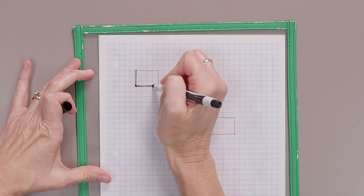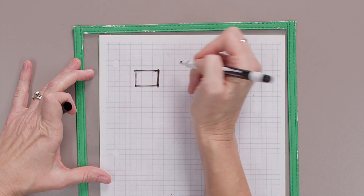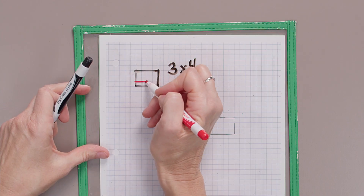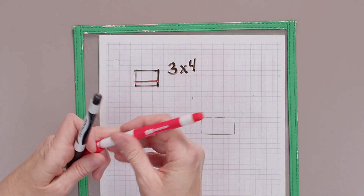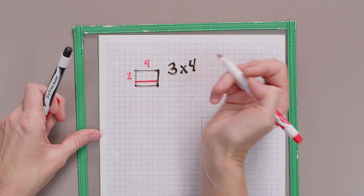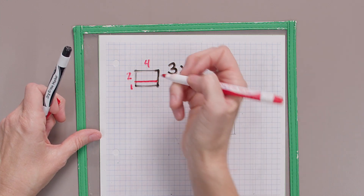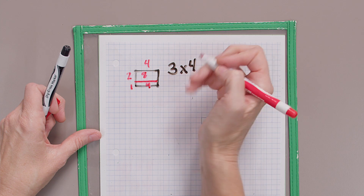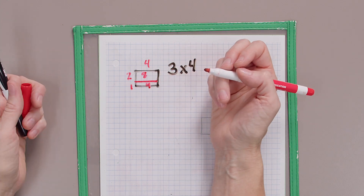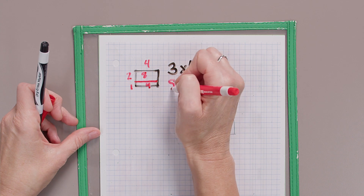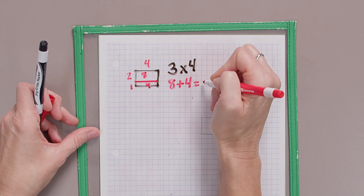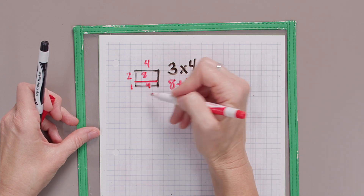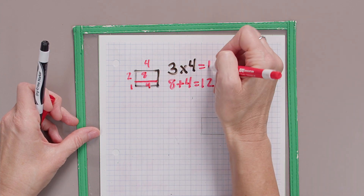I'm going to draw a rectangle three by four because I'm solving three times four. And in that model, I don't know three times four. But what do I know? Well, I know two times four and I know one times four. So I can label this here a two by four and a one by four. And then I can solve: two times four is eight, and one times four is four. And what do I do with those two products? I'm going to add them together to find the total. Eight plus four equals 12, so three times four equals 12.